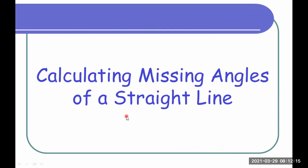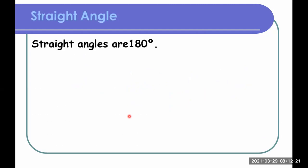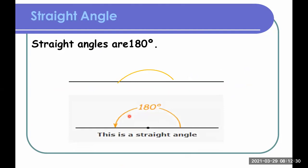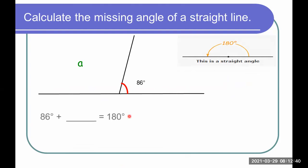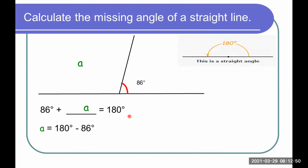Now let's look at calculating missing angles of a straight line. A straight line forms a 180 degree angle. If you are given an angle forming on a straight line, the sum of the angles must be 180 degrees. For example, with angles 86 degrees and angle A: 86 plus A equals 180, so A equals 180 minus 86, which is 94 degrees.